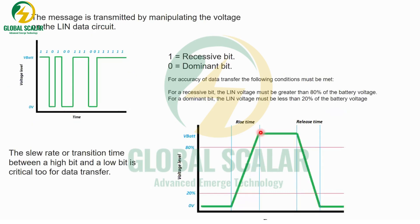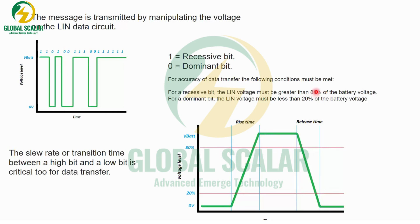In CAN, one is recessive and zero is dominant. Similarly in LIN, the same mechanism applies. The recessive level is above 80% of voltage and the dominant level is at or below 20%. This graphical voltage data can be measured from the oscilloscope to verify the 80% and 20% percentage levels.